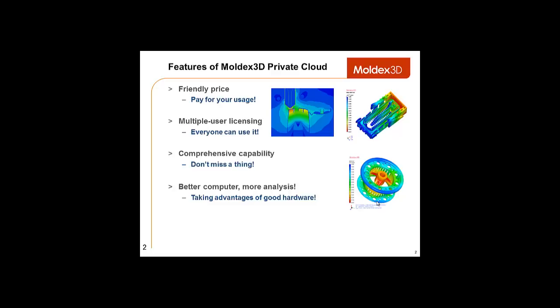Next, the licensing. We allow up to 4 users to use the software simultaneously. That means if one company buys one license, they can have 4 employees working on the cloud at the same time from different computers.